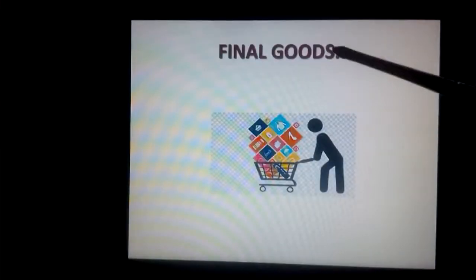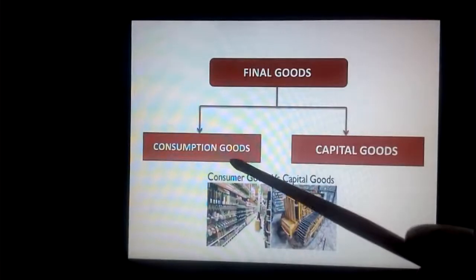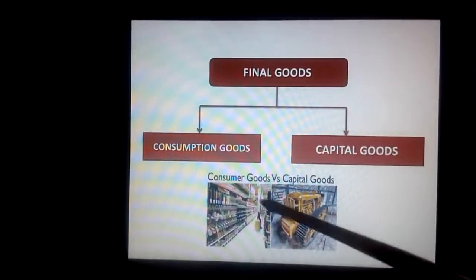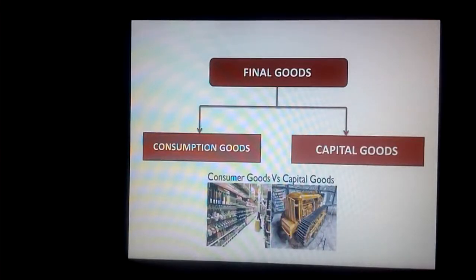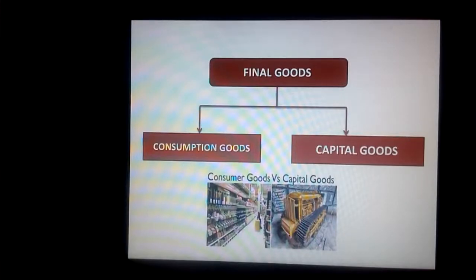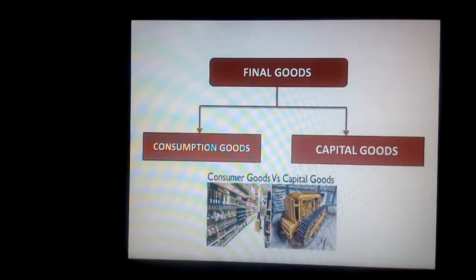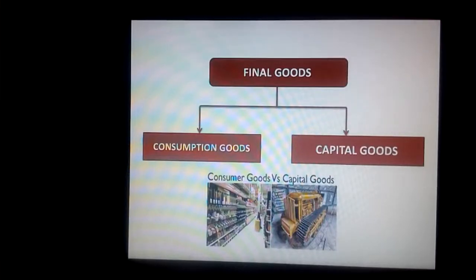Final goods are classified into two categories: consumption goods and capital goods. Goods like food and clothing, and services like recreation, that are consumed when purchased by their ultimate consumer are called consumption goods or consumer goods. Capital goods are those final goods which help in production and are used for generating income. These goods are the fixed assets of the producer — for example, plant and machinery. Here, plant does not mean a tree; it refers to an industrial plant.